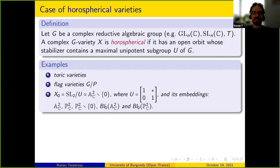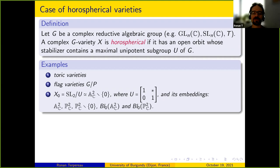In between, you have horospherical varieties, whose combinatorial description is much easier than in the spherical setting, but the class is bigger than toric varieties. For instance, smooth projective horospherical varieties with Picard rank 1 include all flag varieties G/P with P a maximal parabolic subgroup, plus five families of varieties with three orbits classified by Pasquier in 2009 — including the odd symplectic Grassmannians.